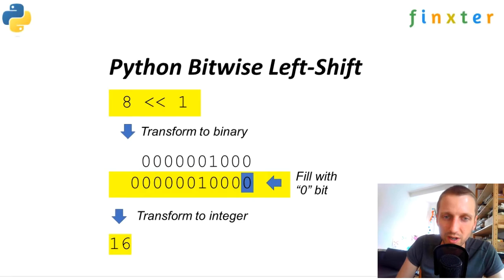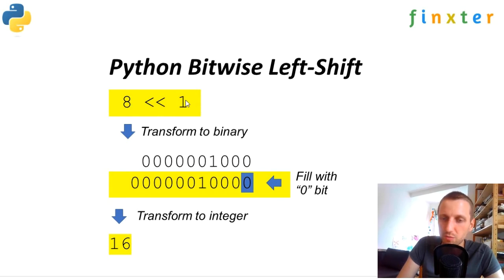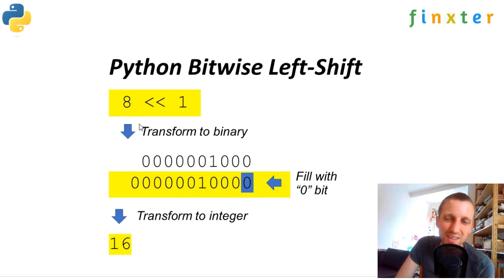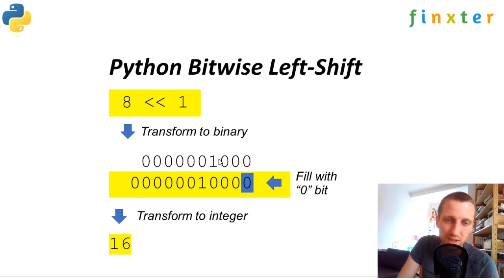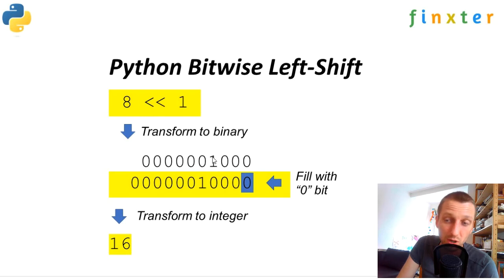Why does any left shift operation double the value? Say we have the integer 8 shifted by one position. Python transforms the integer to its binary representation. We have a binary number with a bunch of zeros and one bit set — representing the integer 8. That is: zero times 2^0 plus zero times 2^1 plus zero times 2^2 plus one times 2^3. Two to the power of three is eight, so we have one times eight.